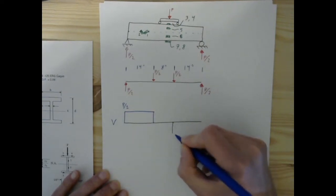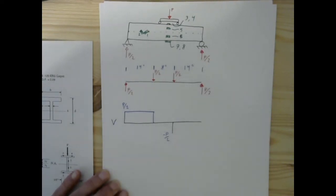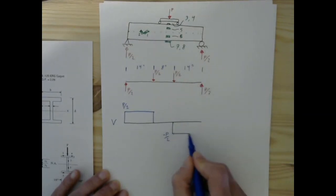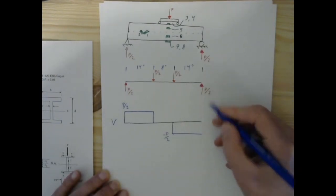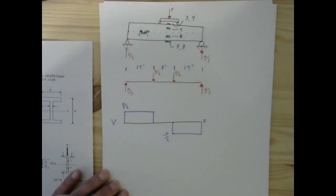After that, we're going to drop down to negative P over 2 because we're going to drop down P halves. Then no distributed load means no change in the shear from this point all the way to the end, at which point we have a reaction of P over 2 which brings us back to zero. Very good, looks okay to me.